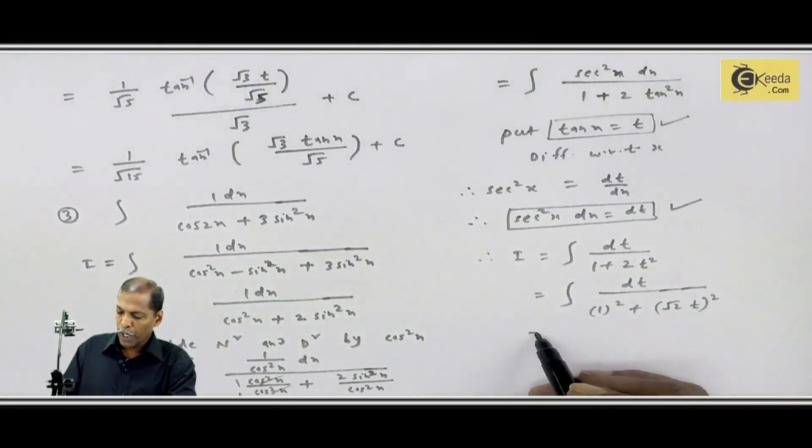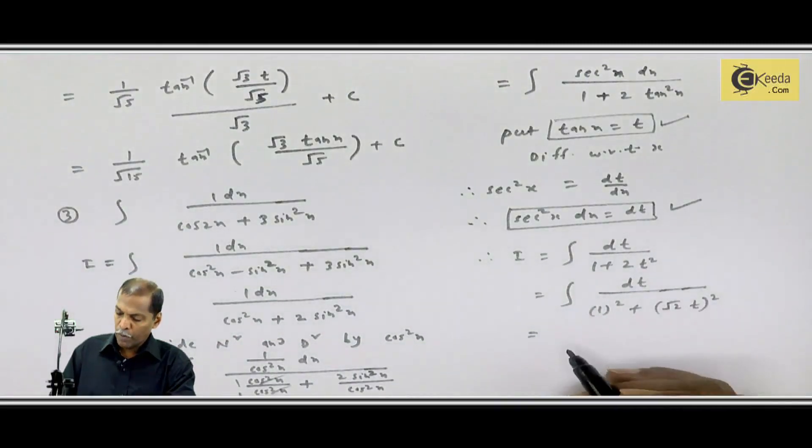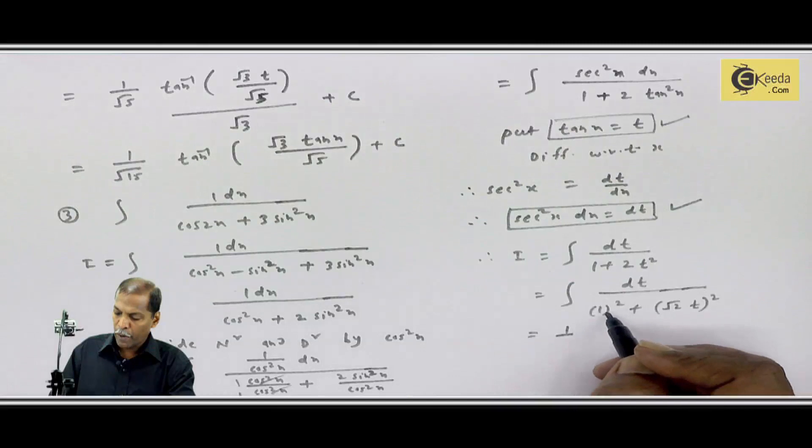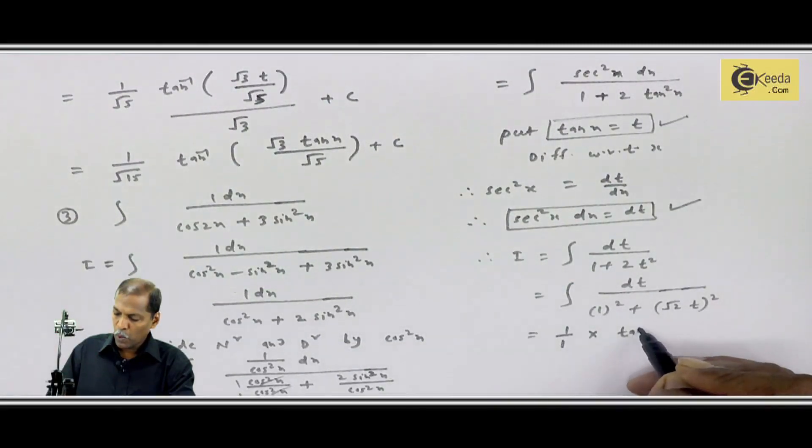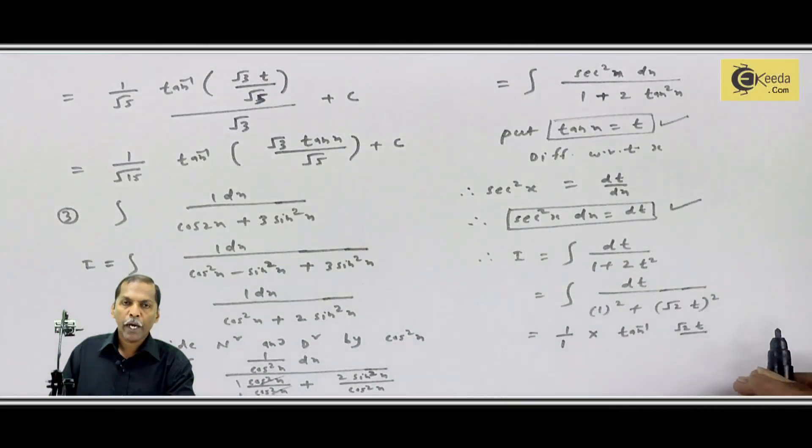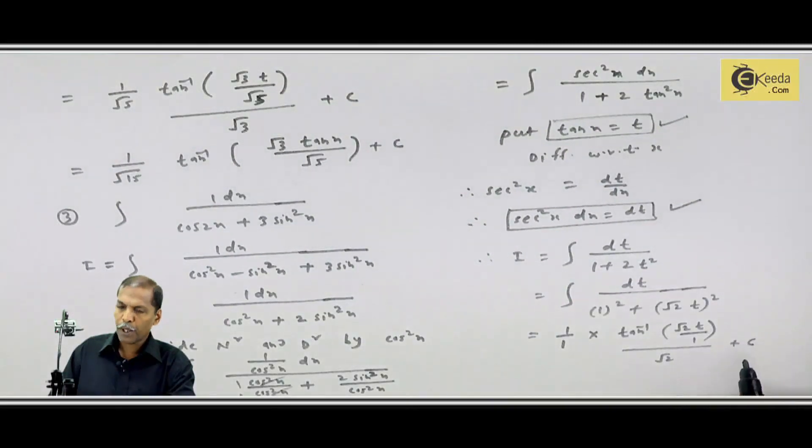Isliye hum use likhenge root 2 into t bracket square. Phir se hamein same formula mila integral dx upon x square plus a square ki jiska answer aata hai 1 upon a tan inverse x upon a. Yahan par aayega 1 upon a. a ka value yahan par kya hai? 1 into tan inverse x. x ka value hai yahan par root 2 into t upon a. a ka value hai 1 upon t ka coefficient ki ki jo tha root 2 plus c.